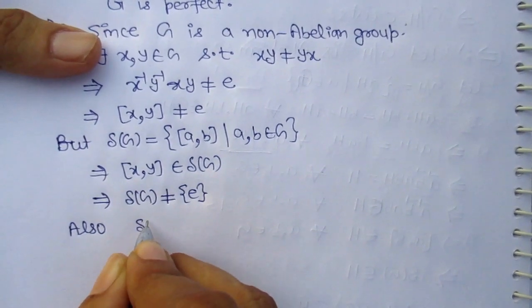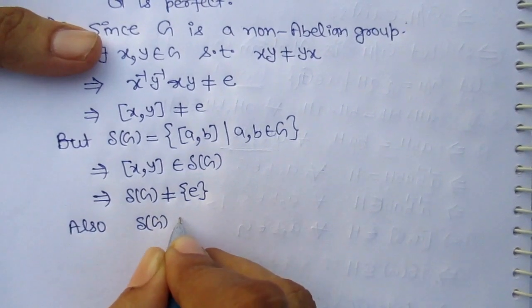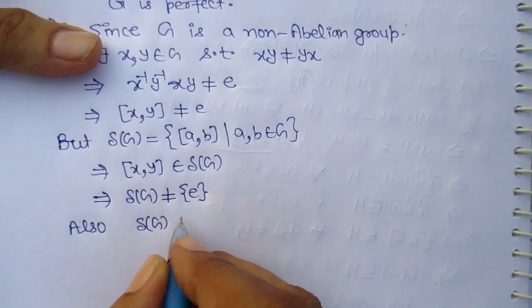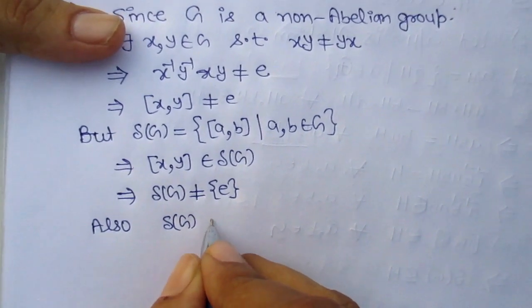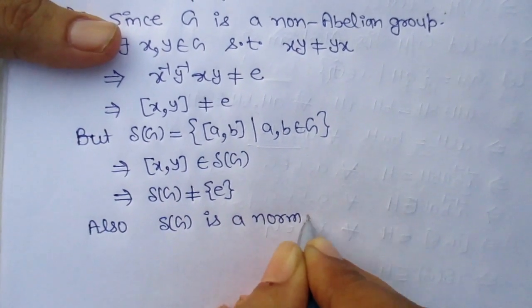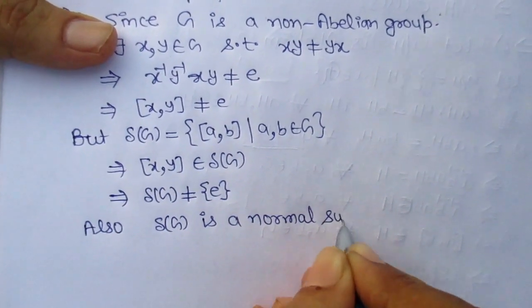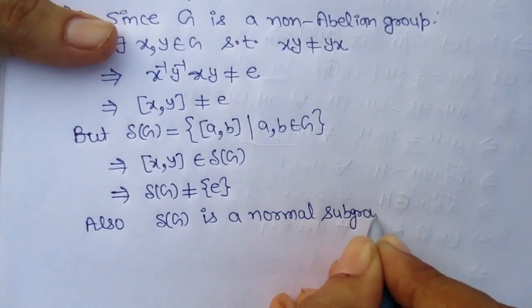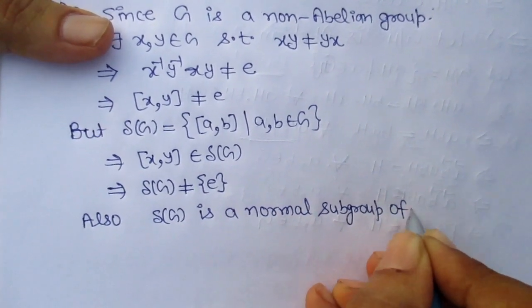Also, delta G is a normal subgroup of G.